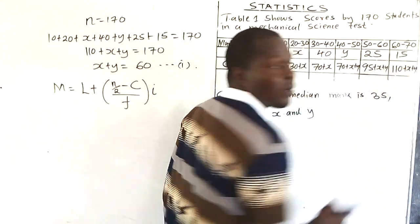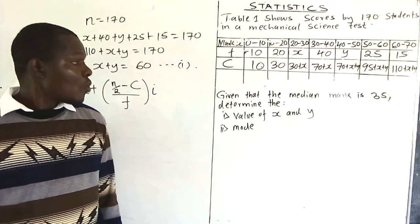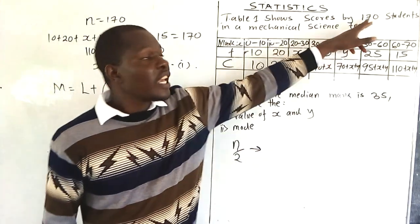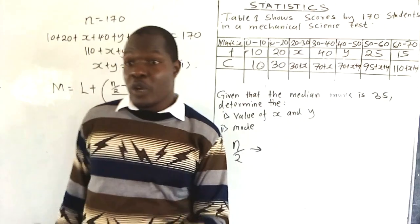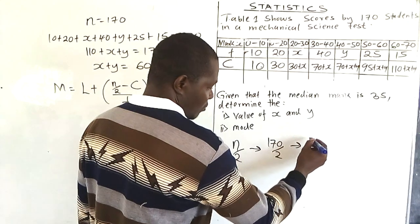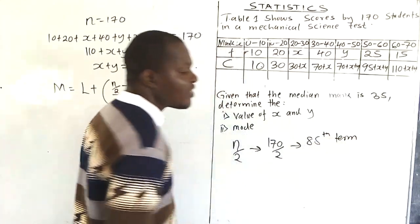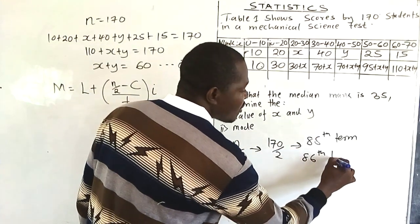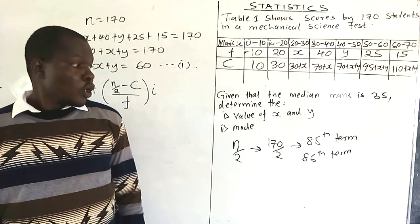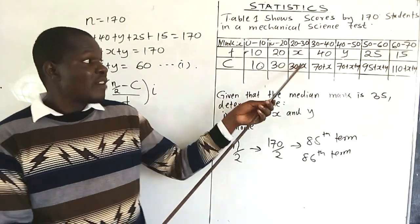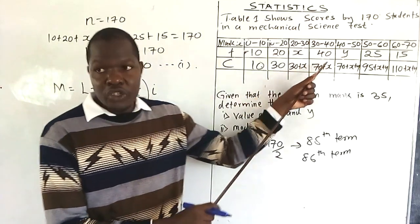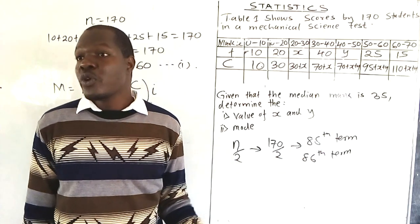So n/2 = 170/2 = 85. Since n is even, there are two middle values: the 85th term and the 86th term, with an average of 85.5. Now, 70+x is the cumulative frequency before the class 40-50. We don't know if x < 15, so we can't be sure the 85th term is in that class. The 85th term falls in the class where the cumulative frequency reaches 70+x+y, which is the class 40 to 50.